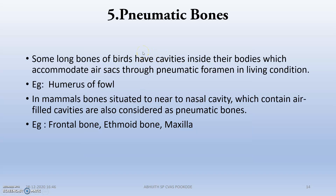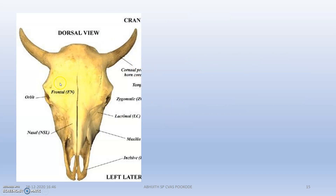Next are pneumatic bones — something related to air. Some long bones of birds have cavities inside their bodies which help to reduce weight so that air can be accommodated. A very good example is the humerus of the fowl. In the case of mammals, some bones are considered to be pneumatic, such as the frontal bone, ethmoid bone, and maxilla. See the frontal bone here.